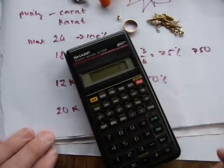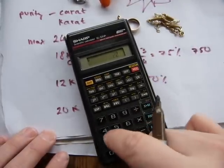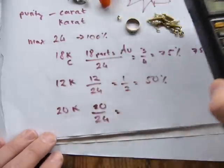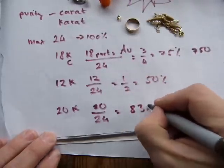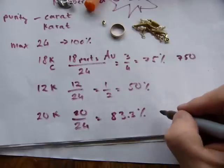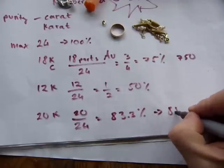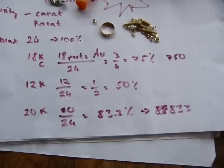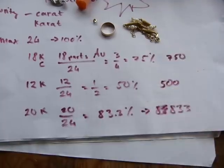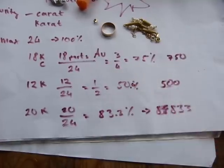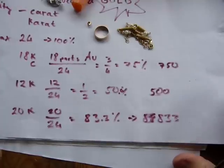Let's do a third example: 20-carat gold would be 20 out of 24. That fraction doesn't reduce easily, so on a calculator: 20 divided by 24 equals 0.8333, so that's 83.3% gold. Because of these decimal percentages, the millesimal or thousand-base system is also used — so 20-carat would be 833. Twelve-carat would be 500, because it's 50% — we just drop the decimal and call it 500 gold.